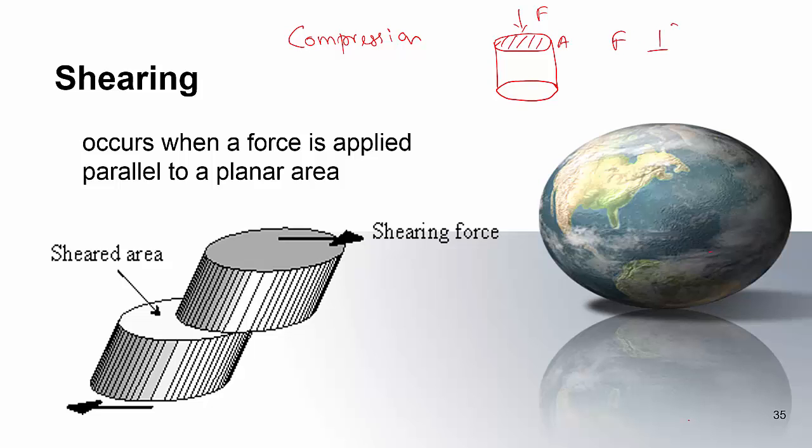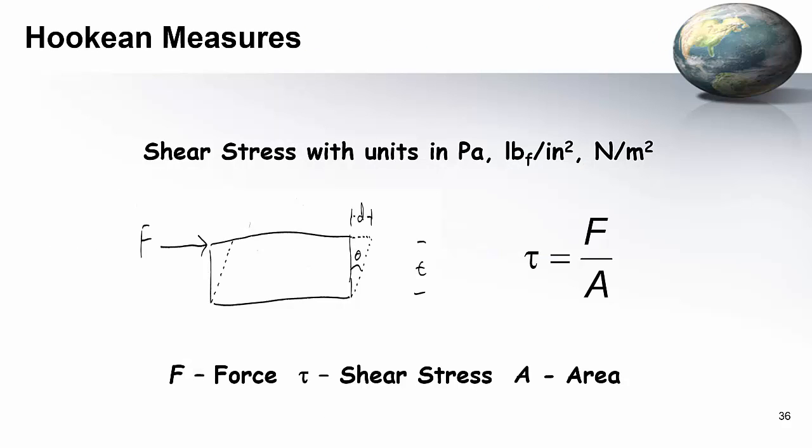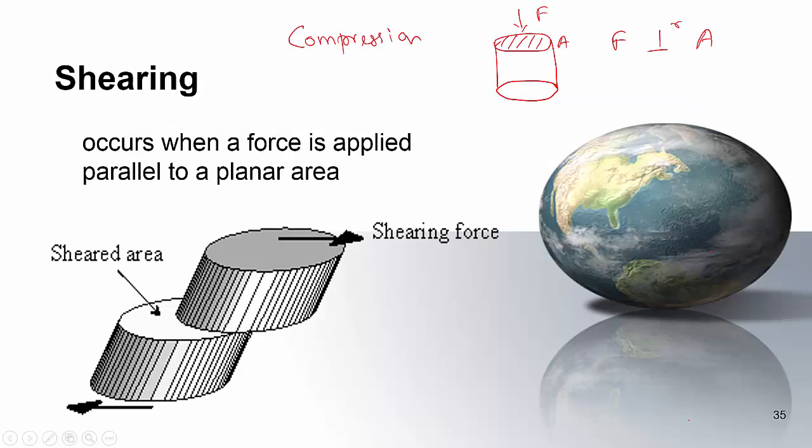So F is perpendicular to the area. Whereas in shearing, your force is parallel to the shearing area. So that's the difference between compression and shear.